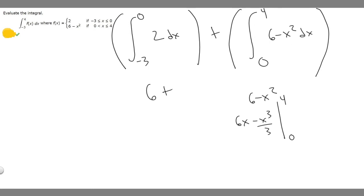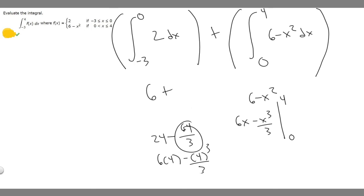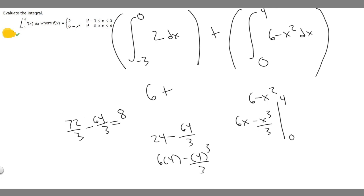Plugging in 4: we get 6 times 4 minus 4 cubed over 3. That's 24 minus 64 over 3. Rewriting 24 as 72 over 3, we get 72 over 3 minus 64 over 3, which equals 8 over 3. So when we plug in 4, we get 8 over 3.